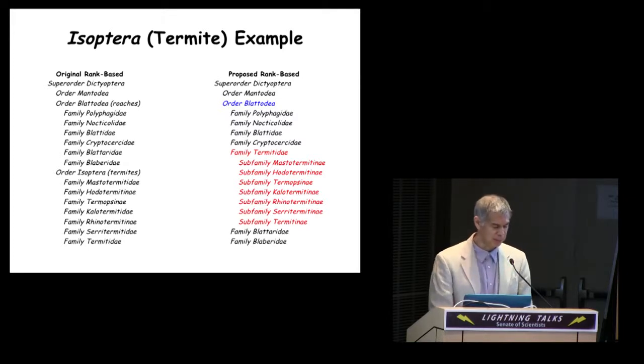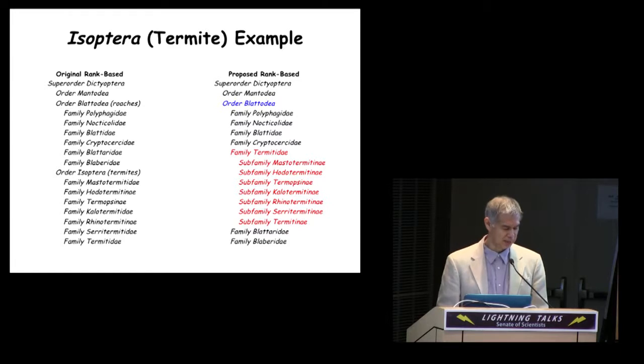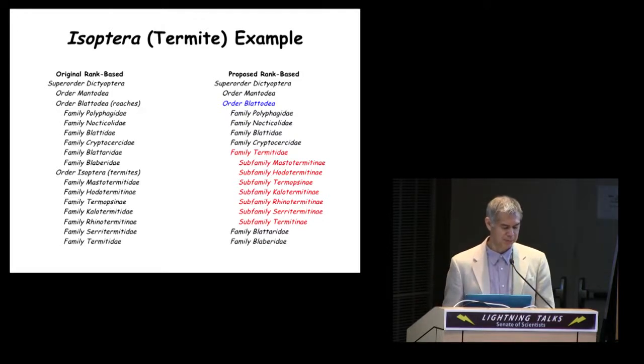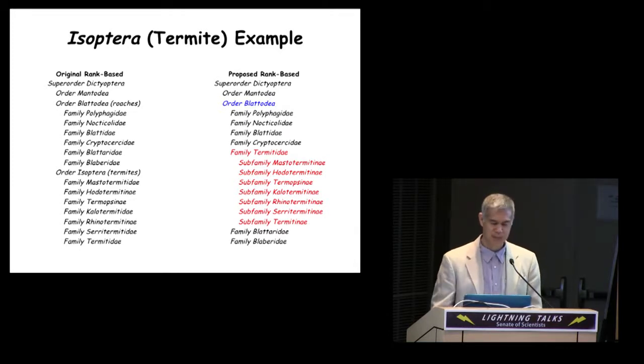Second, the termite clade changes its name from Isoptera to Termitidae. And in addition, all the former termite families are lowered in rank to subfamilies, so they also have to change their names. And all of these name changes, indicated in red, are detrimental to communication given that the composition of the groups remains the same.